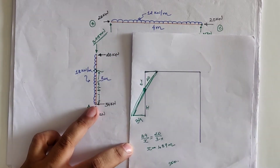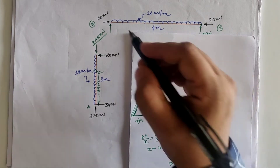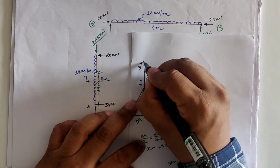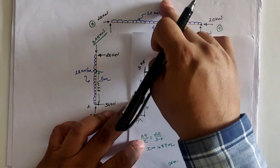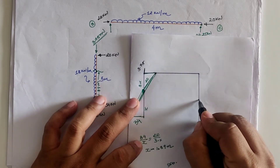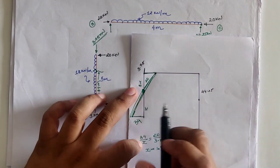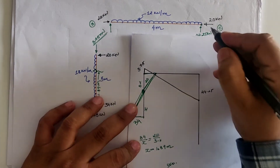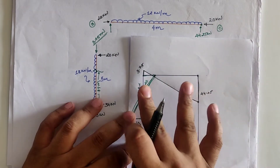So from location A at 1.89 m, the maximum bending moment between A and B occurs. For the BC span: 3.75 kN acts upward at B. From B to C, 12×4 = 48 kN acts downward, giving 3.75 minus 48 = minus 44.25 kN at C. These two points are connected by an inclined straight line due to the UDL.